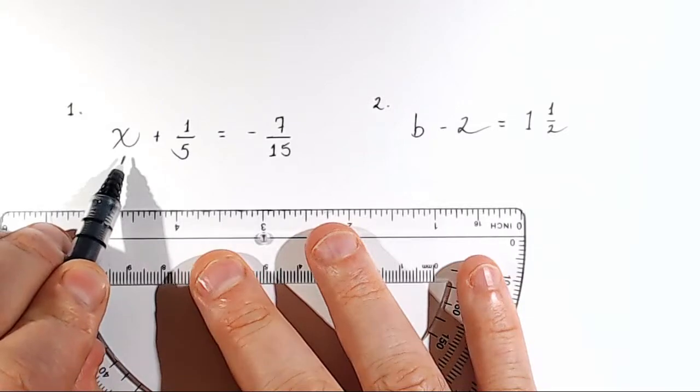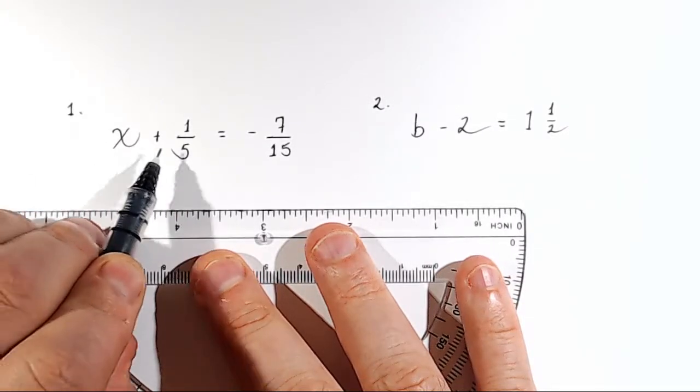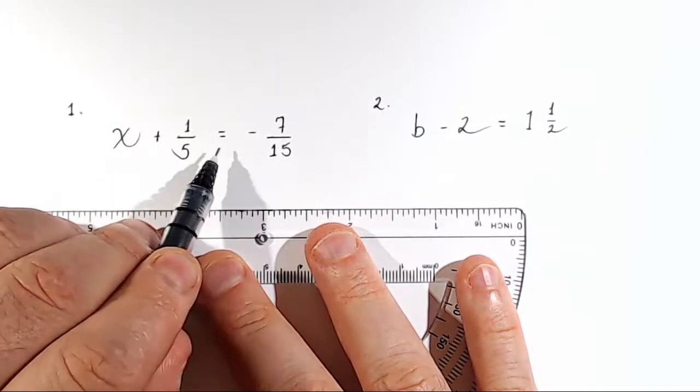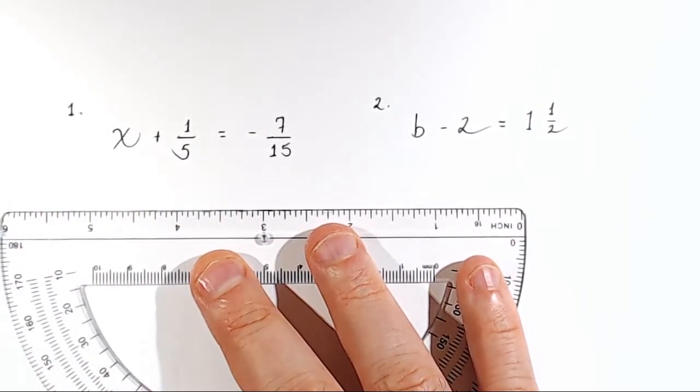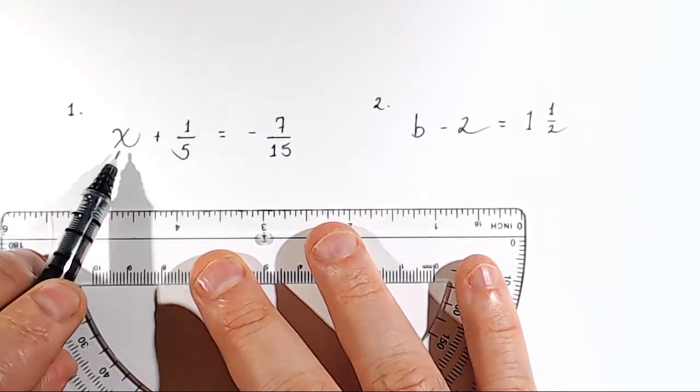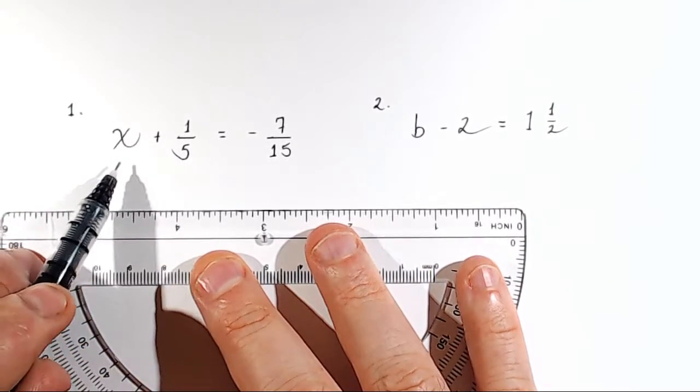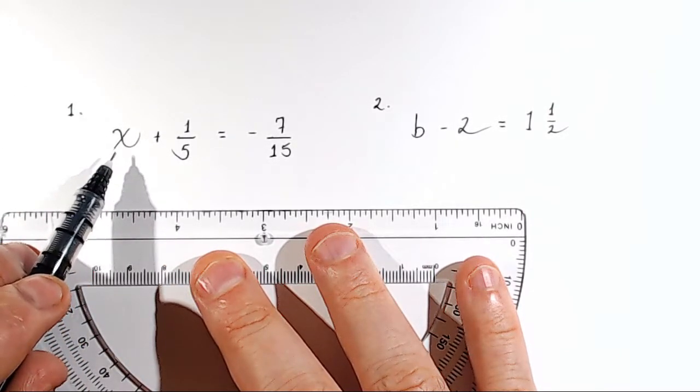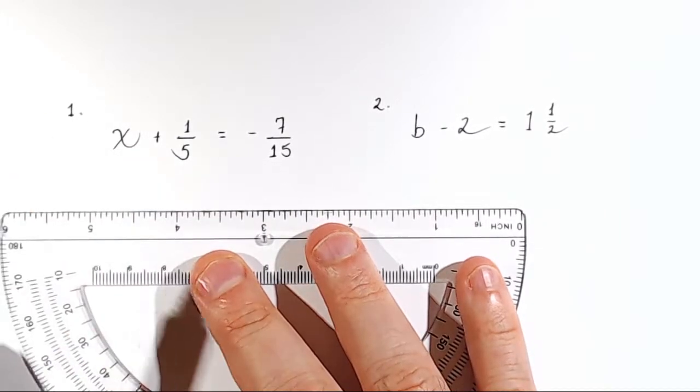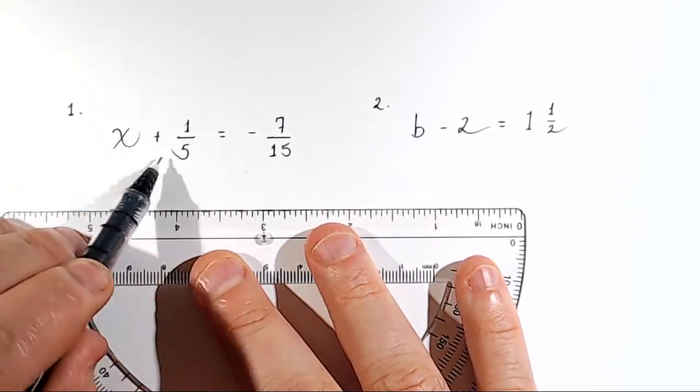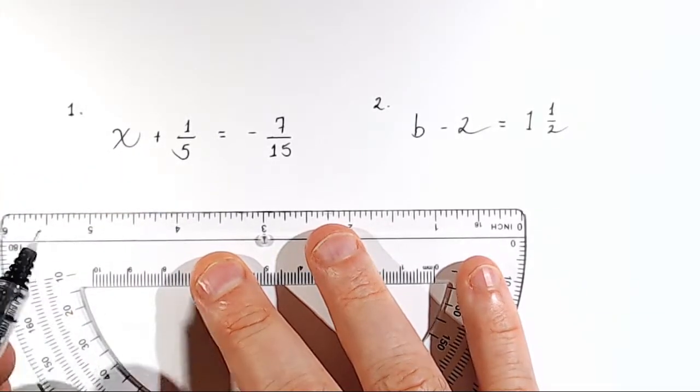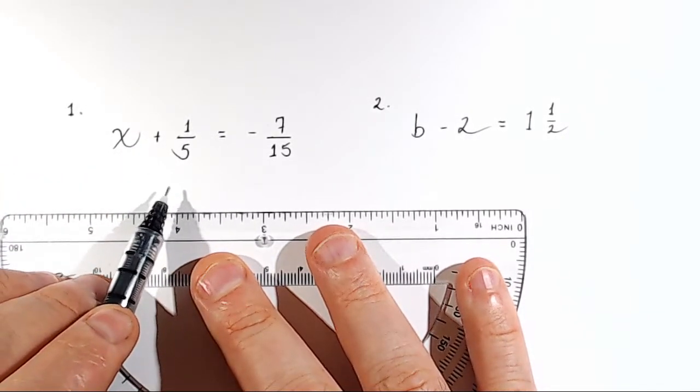So let's see what we do. We have in number one, x plus one-fifth equals negative seven-fifteenths. So remember what our goal is. Our goal is to get the variable x by itself. It's on the left side, so we'll keep it on the left side. But right now, it's not by itself. It has one-fifth added to it. So we have to get rid of the one-fifth on the left side.